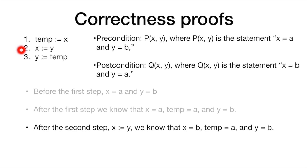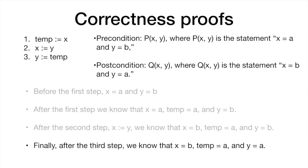When we execute the third step, x is equal to b from the previous step, and we didn't modify x in the third step. Temp remains equal to a, and y will be equal to a. So the values of x and y exactly match what we have in the postcondition, meaning the postcondition holds. Because we didn't use any specific value like 1, 2, or 3, it holds for any value. Therefore, we have just proved that our algorithm is correct.